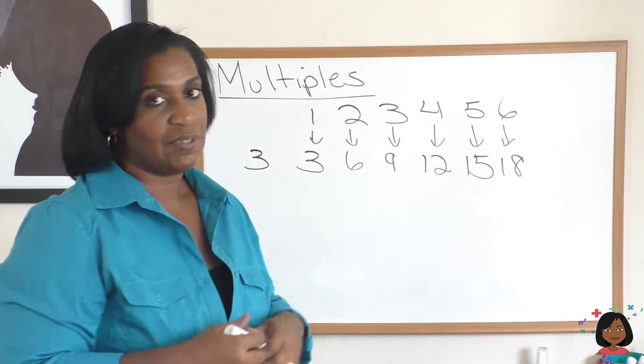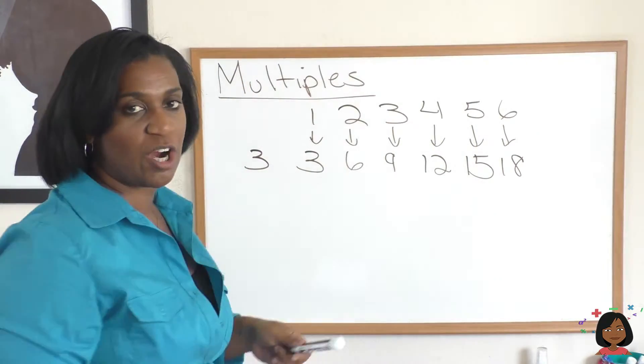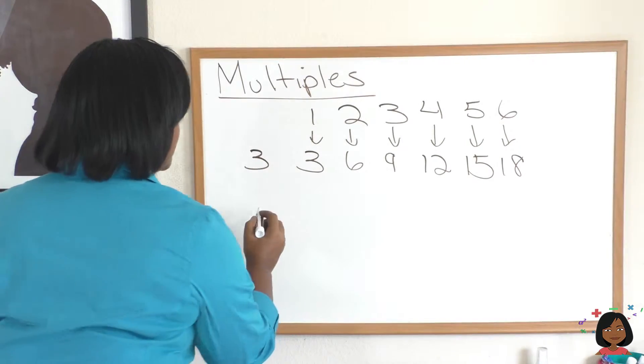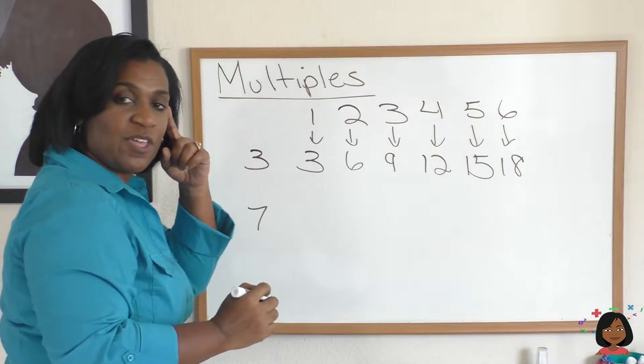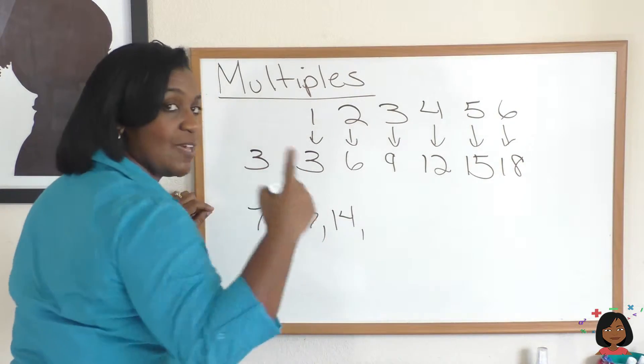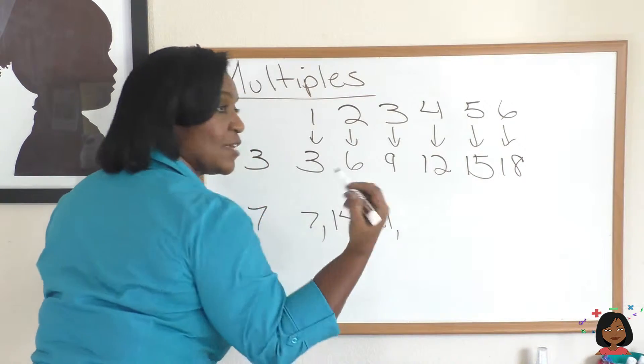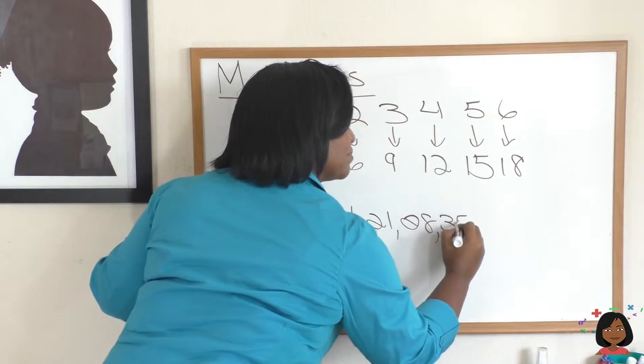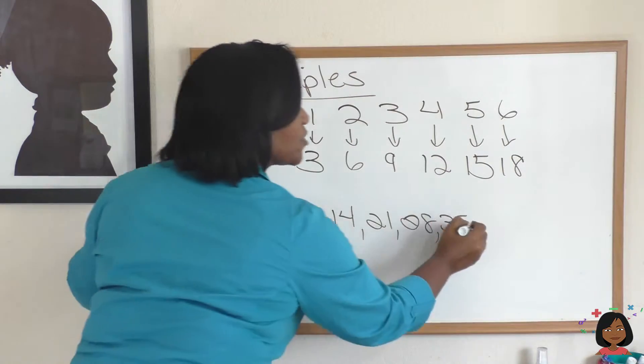So let's try it without having to draw the little chart. If I said find the multiples of seven, in your head I want you to think what's seven times one? Seven. What's seven times two? Fourteen. Seven times three? Seven times four. Seven times five? And so on and so forth.